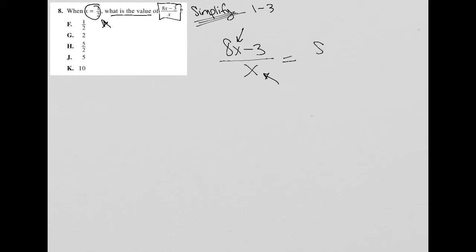So this becomes 8 times one half minus 3 over one half. What is 8 times a half? Half of 8 is 4. So 4 becomes the result of 8 times a half. Then I have 4 minus 3, which is 1.